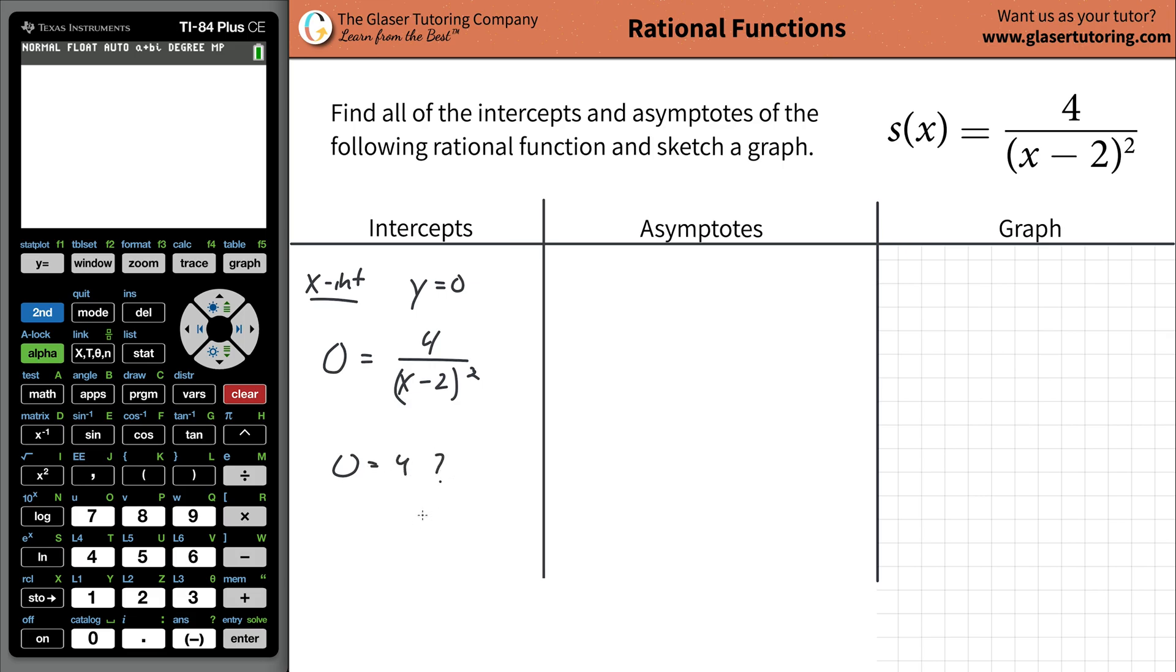So the problem is, though, when you do this, you cross multiply and it works out to be zero equals four. And that doesn't make any sense. So guess what that means? That means you don't have an x-intercept. You follow this method, and if it doesn't work, there is no x-intercept. I'm just going to write none.